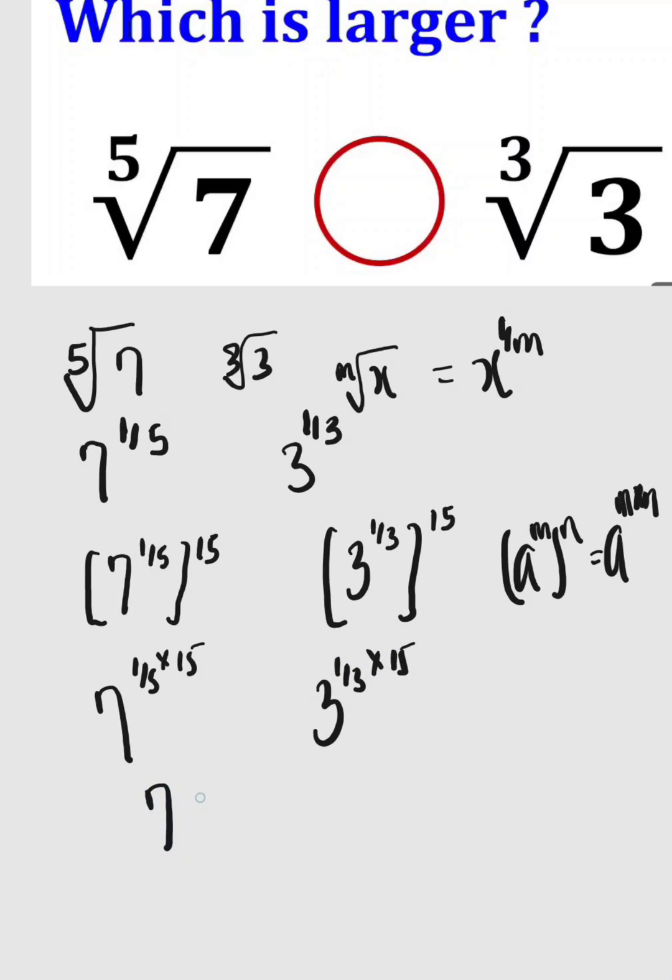This gives us 7 to the power of 3, and 3 to the power of 5. So 7 to the power of 3 is 343, and 3 to the power of 5 is 243. We can see that 343 is greater, so the fifth root of 7 is greater than the cube root of 3.